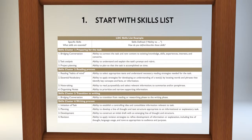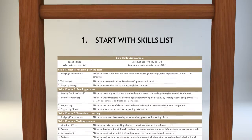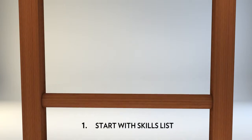Start with the skills list. The skills list identifies the skills that need to be taught. These skills are an outgrowth of the Common Core standards hardwired into the task.